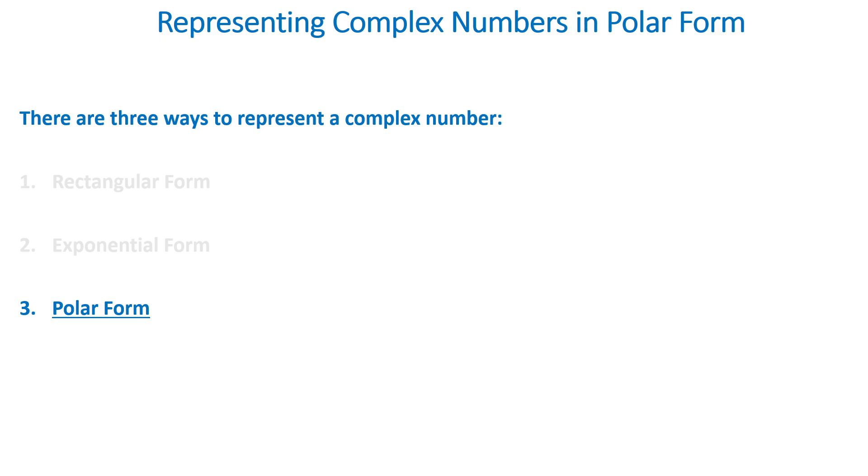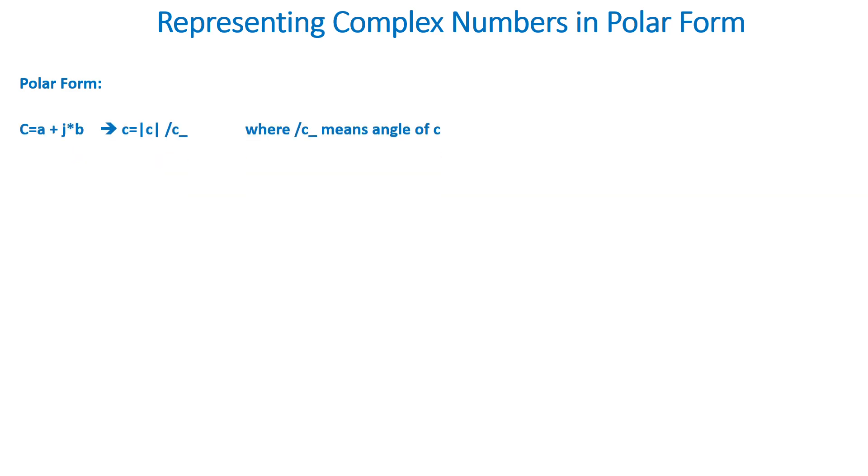Now we're going to see polar form. So basically, if we have a complex number C equal to a plus J times b, we want to write it in the format of C equals its magnitude and its angle. This is very convenient when dealing with phasors. So a and b are real numbers, J squared is equal to negative 1.